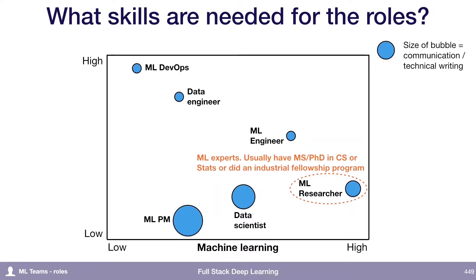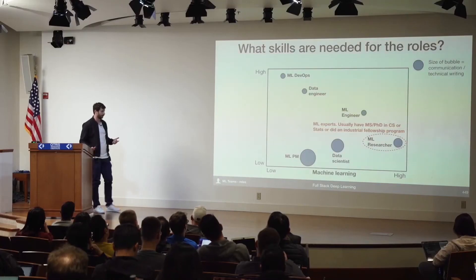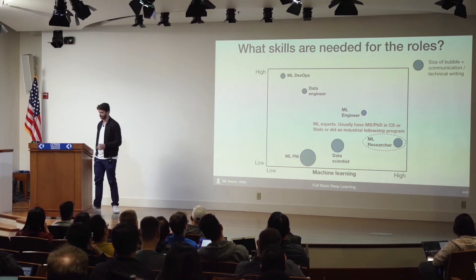ML researchers are your ML experts, and this is kind of the one role that I think typically still requires a PhD. But often there are also people who have a master's degree, or who did one of the industrial fellowship programs like the Google Brain Residency or something along those lines. These folks are generally ML experts, but they're not expected to have a ton of software engineering expertise.